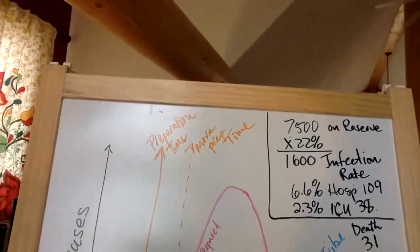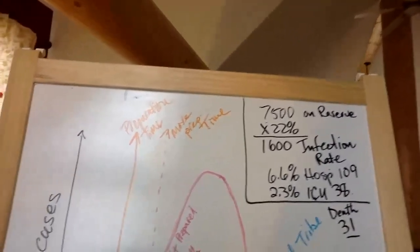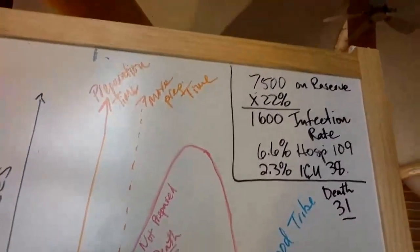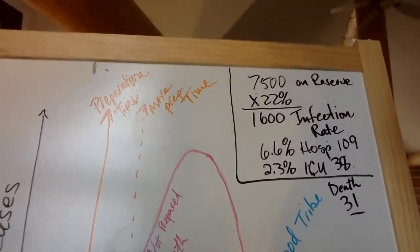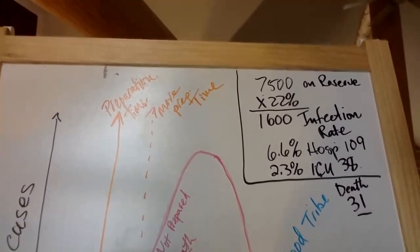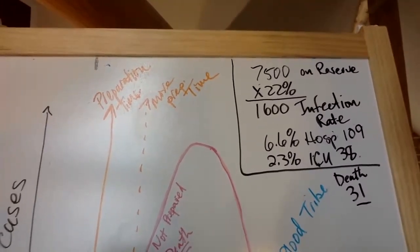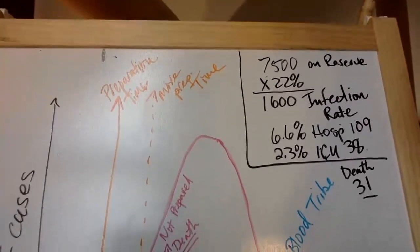So first we've got the numbers here that Martin had given you earlier today. We have approximately 7,500 people on reserve. If 22% of those people get ill, that means that 1,600 people on our reserve will have the infection. So the infection goes from mild to like cold-like symptoms, mild fever and cough to very severe. So somewhere within that 1,600, the number of cases will fall between being mild to very severe to being very, very difficult.